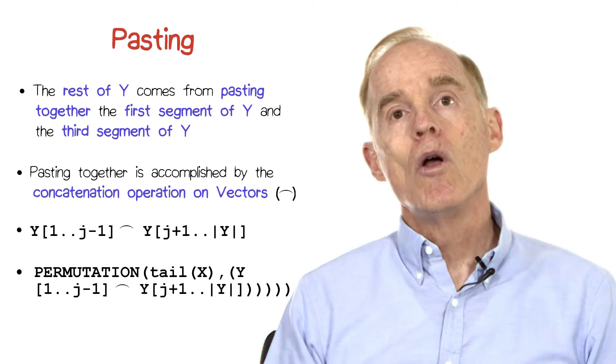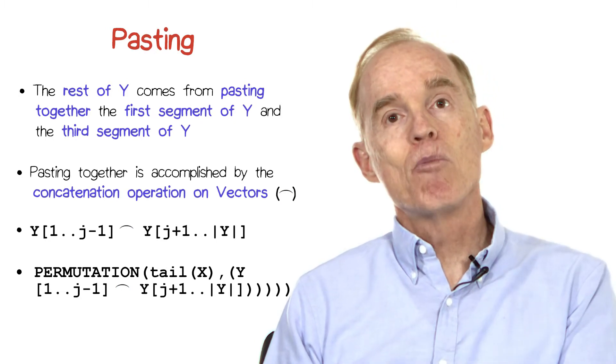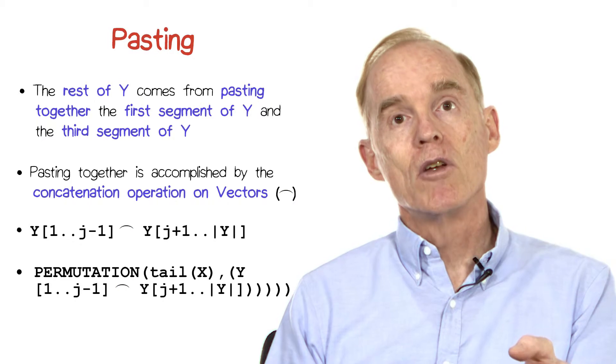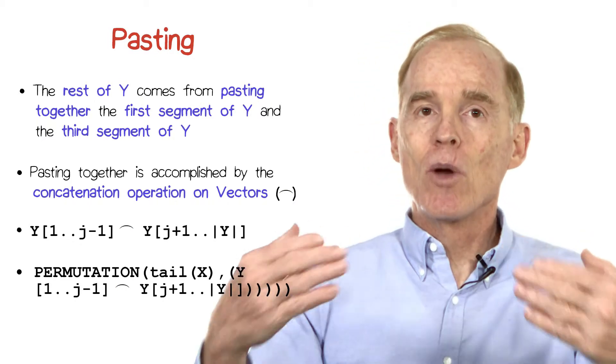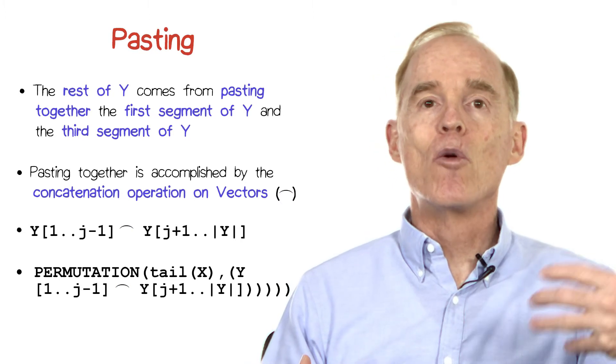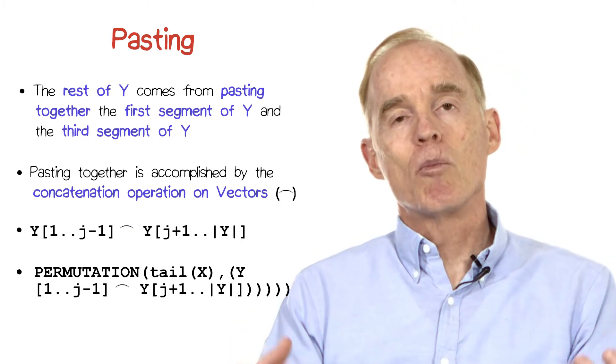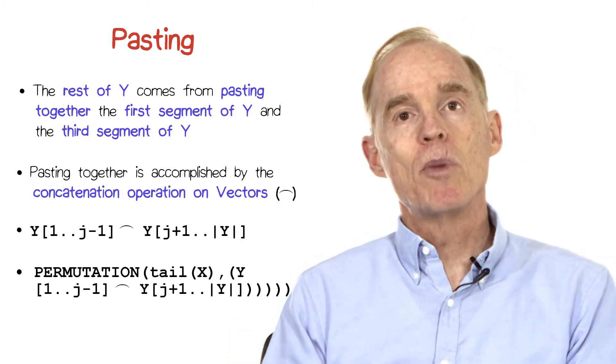Now we know from our equality check that in that jth position, we match the first one of x. We've left that out, we've left out the one in the jth position, and we're now asking recursively the question about whether the remainder of x is a permutation of those two segments pasted together.